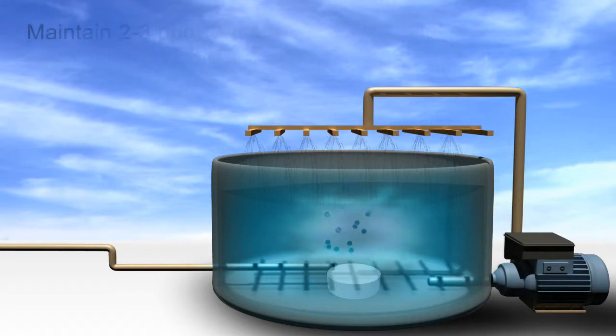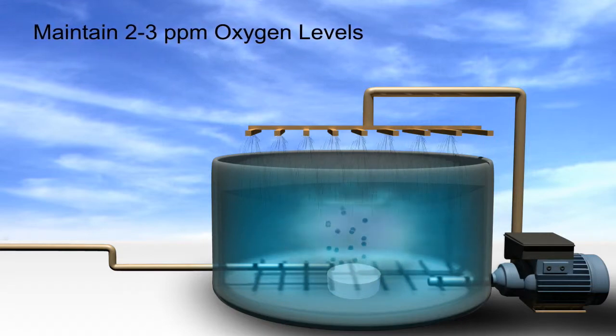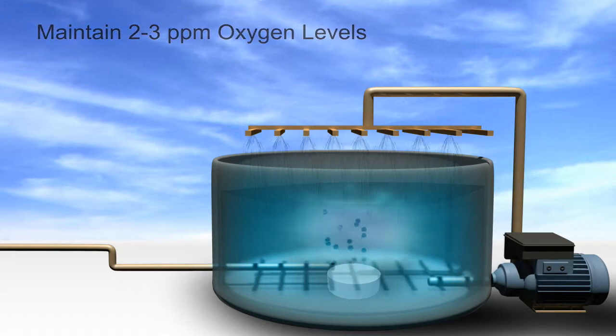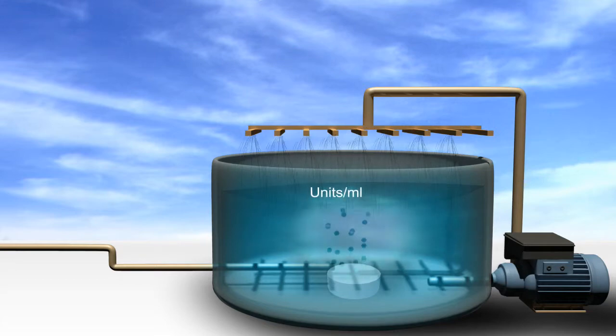Also, we need to maintain 2 to 3 parts per million oxygen to ensure that we have the proper oxygen levels to grow up the bacteria to the 10 to the 8th to 10 to the 9th colony forming units per milliliter.